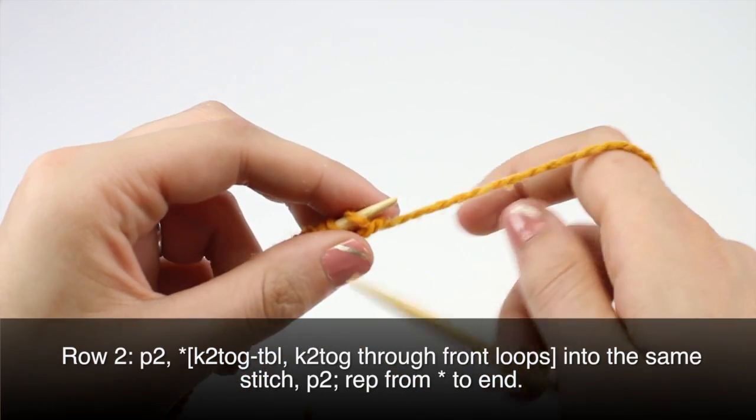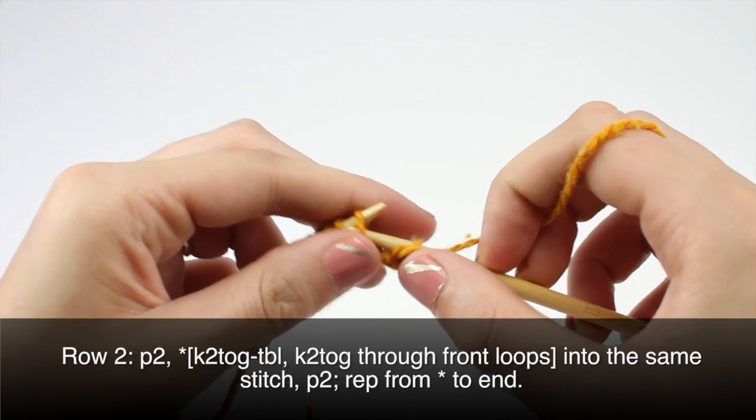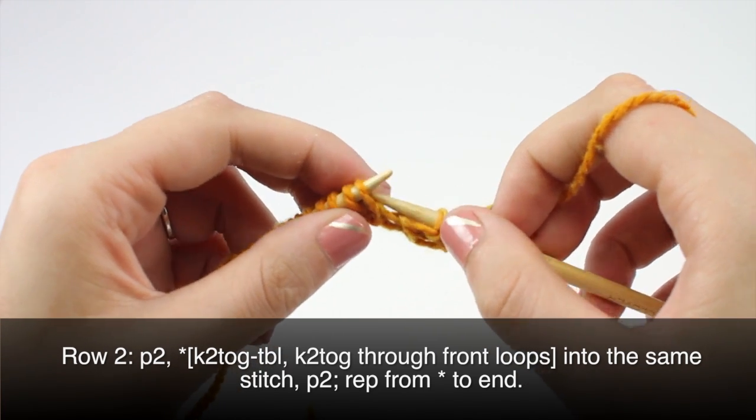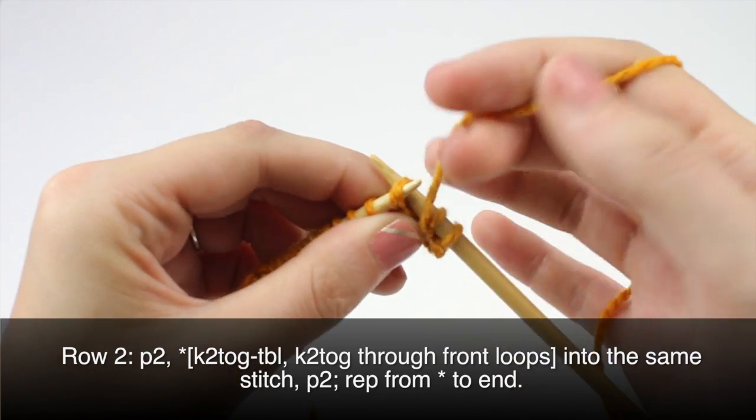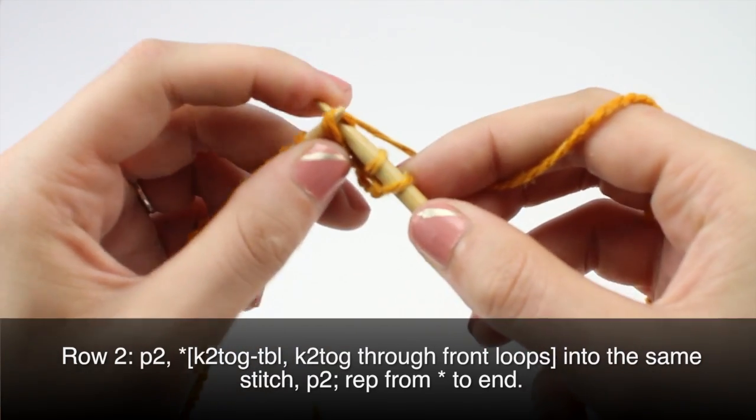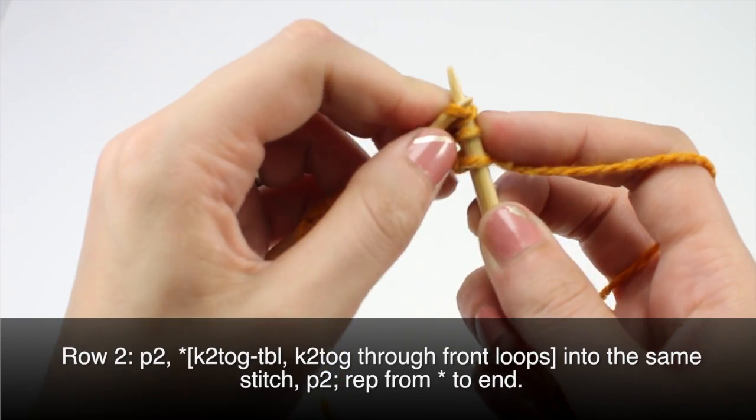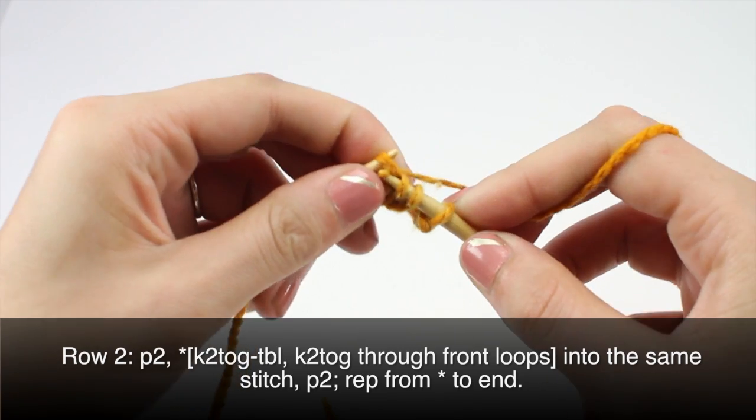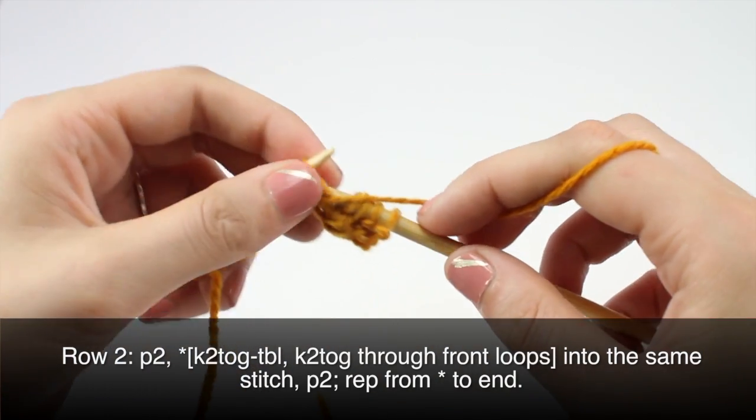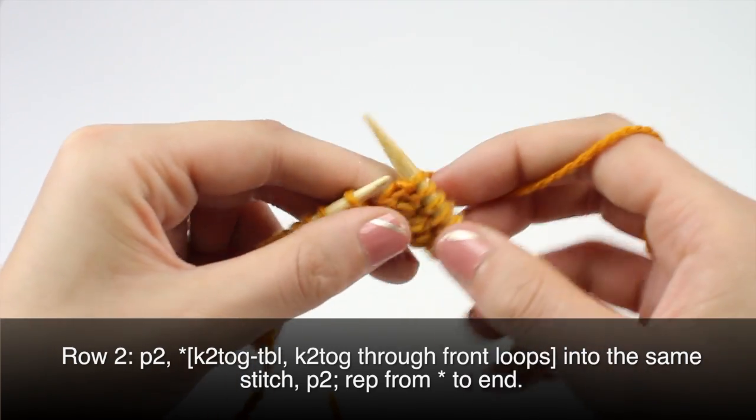Row two. Begin by purling two. Then begin your repeat by knitting two together through the back loop. And then before you pull it off, knit the same two stitches together through the front loop. So it'll be kind of tight there. And purl two. Repeat this until the end of the row.